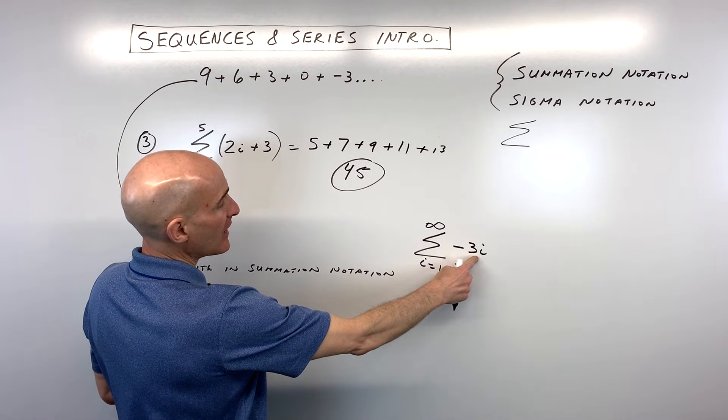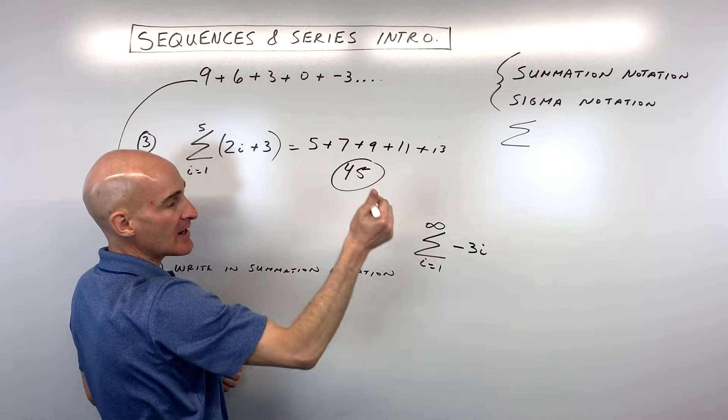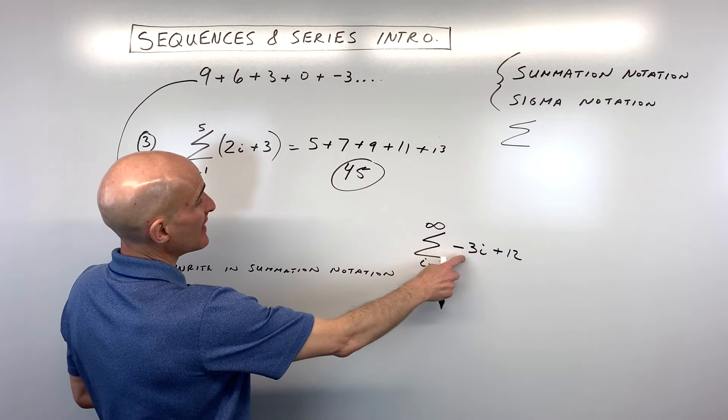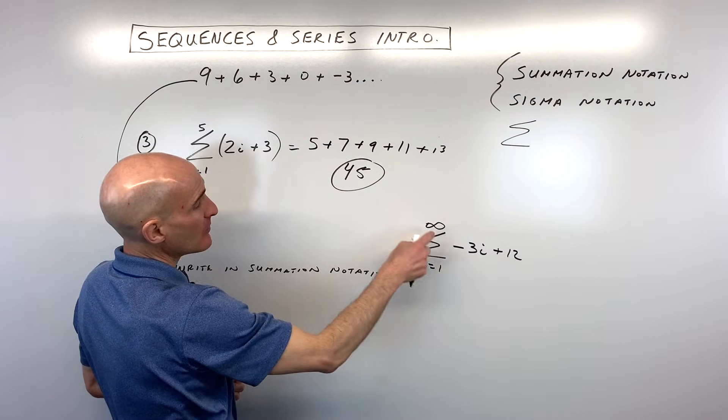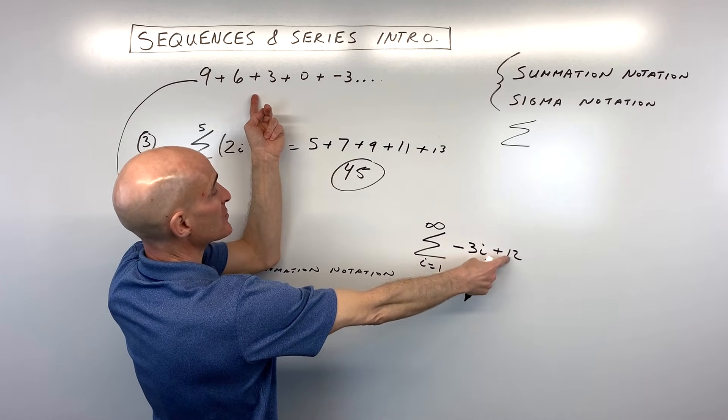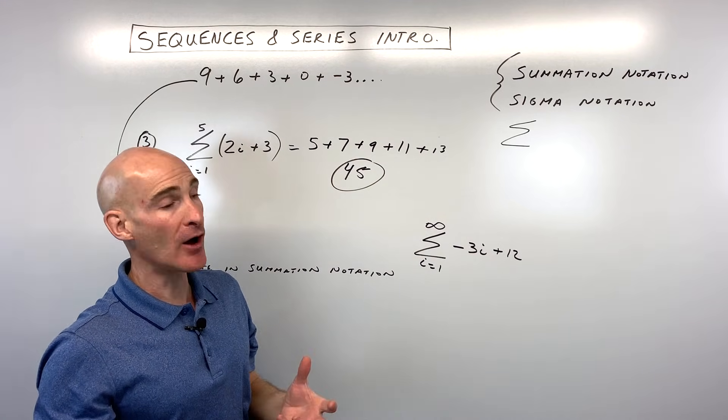But if I put one in here, I get negative three times one is negative three. But see how I'm actually getting nine? So I need to adjust for that and I'm going to add 12. Let's check that out. So negative three plus 12, that's nine. If I put two in here for the second term, that's negative three times two is negative six plus 12 is six. If I put three in here, that's negative nine plus 12 is three. Okay, it looks like it's working out.